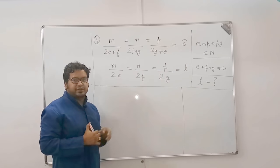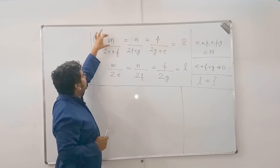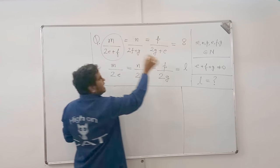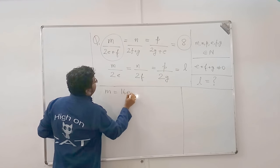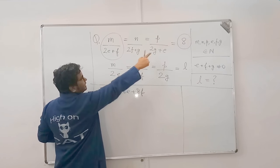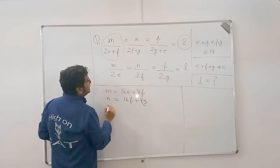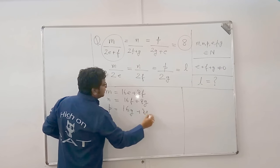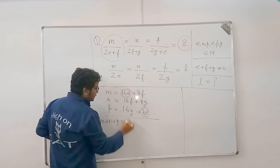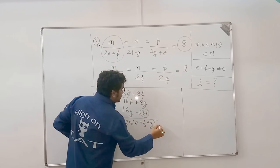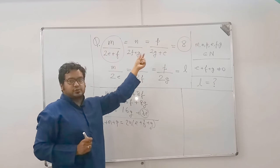So, the first method where we try to solve this equation. Normally in such equations, you need to remove this ratio form by cross-multiplying. If I look at these two together, m can be equal to 16e plus 8f, n is equal to 16f plus 8g and p is equal to 16g plus 8e. So, what is the value of m plus n plus p? m plus n plus p is equal to 24 times e plus f plus g. This becomes your first equation.